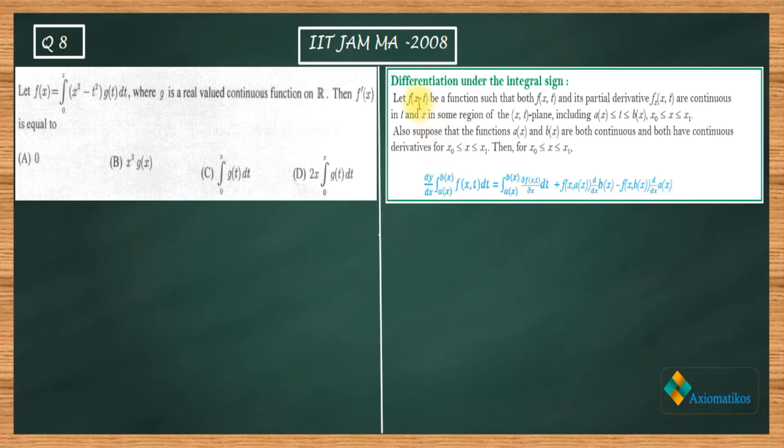Now let us read this note. It says let f(x,t) be a function such that both f(x,t) and its partial derivative, with respect to x we are talking here, are continuous in t and x in some region.